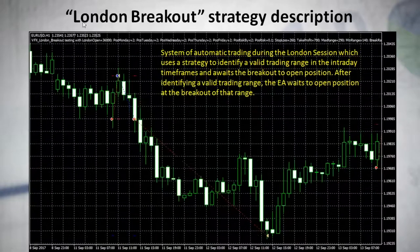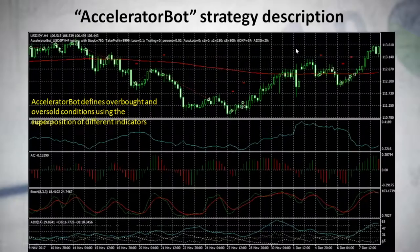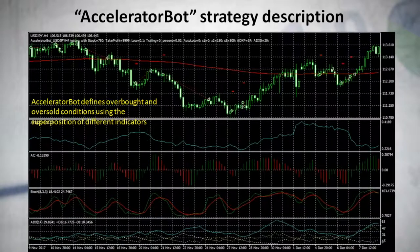The previous one is a breakout trading strategy, the Stomper is a range trading strategy, and this is a swing trading strategy. We have three strategies of three different types, but unfortunately we don't have a trend following strategy.